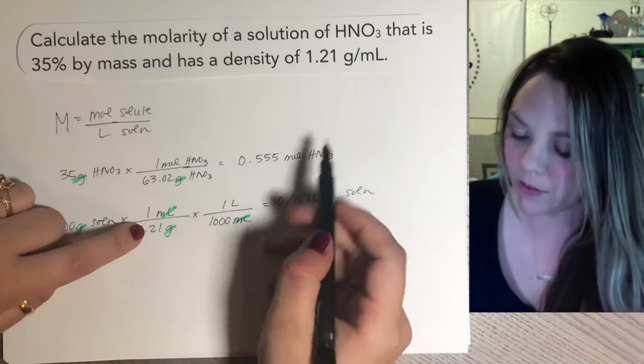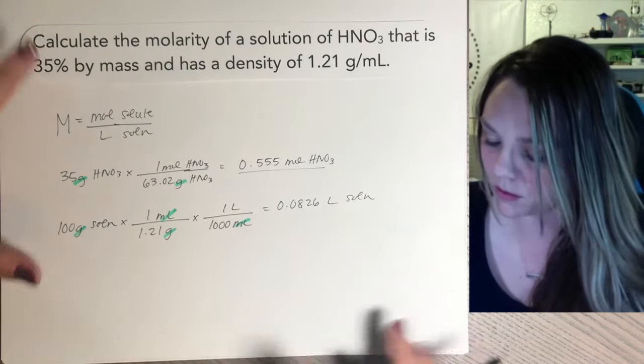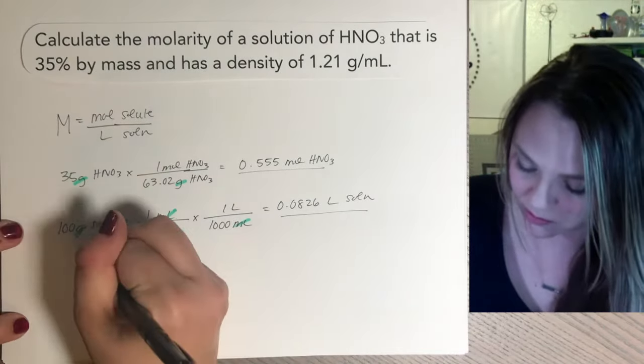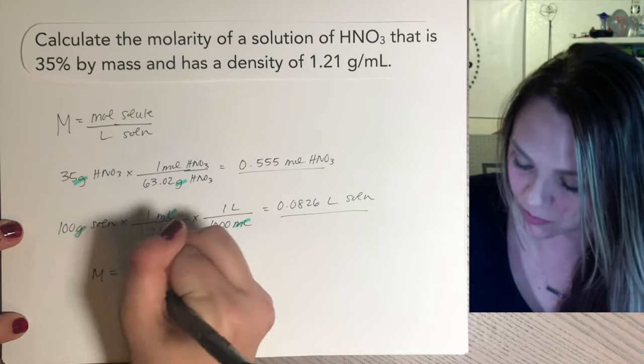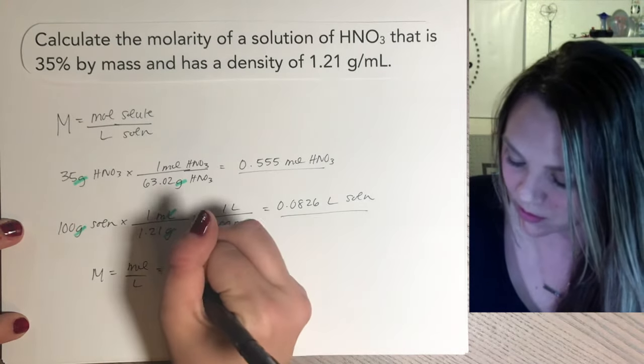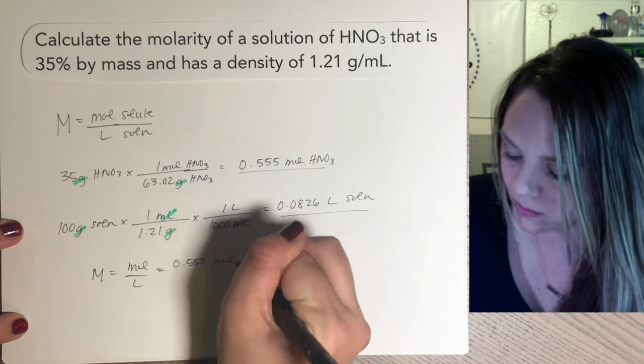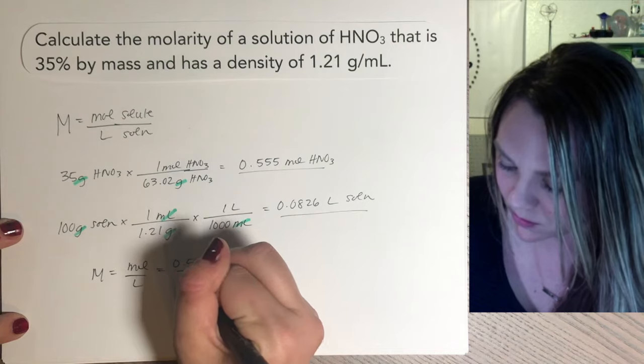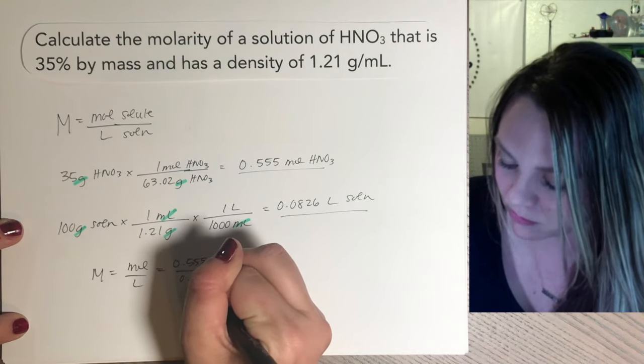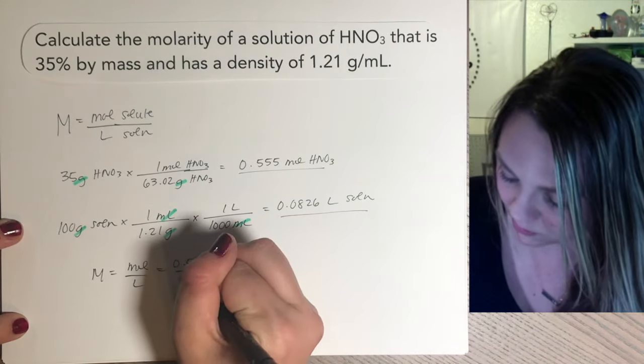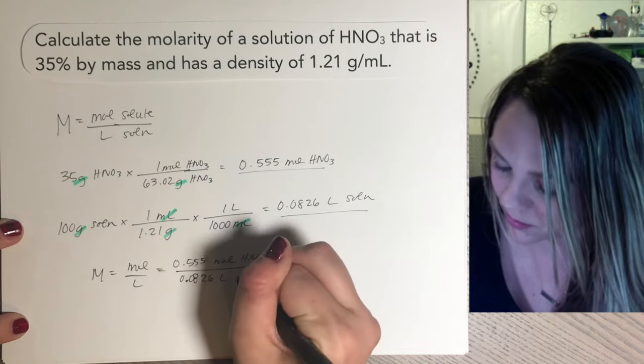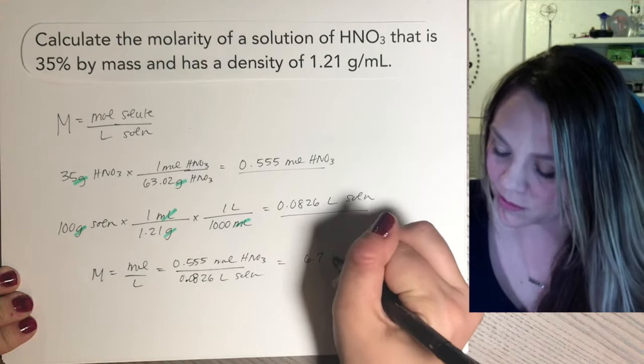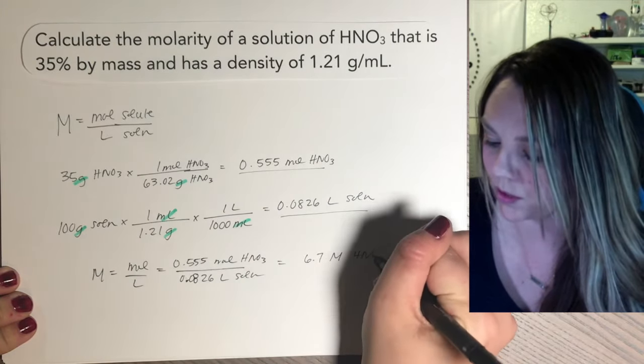Okay. Now I have moles of my solute, liters of my solvent. Just divide. Molarity is mole per liter. So that's going to be 0.555 moles divided by 0.0826 liters of solution. And if you do that, you'd still get the exact same number of 6.7 molar HNO3.